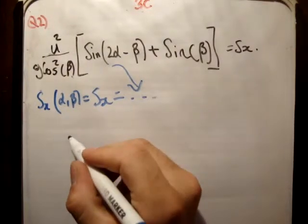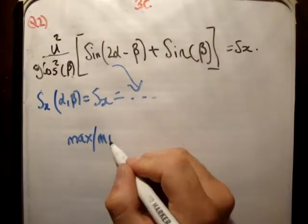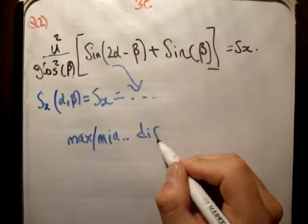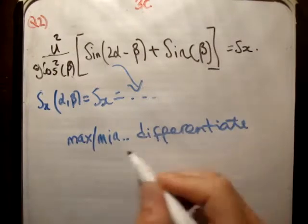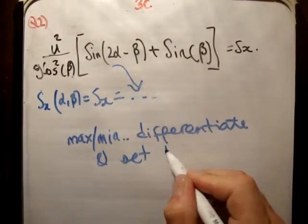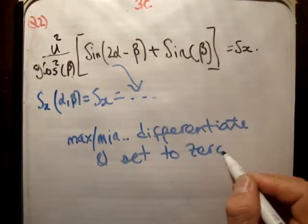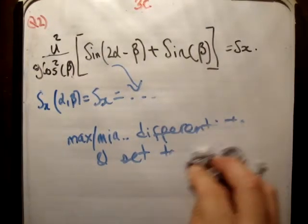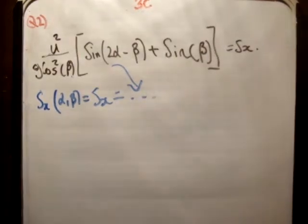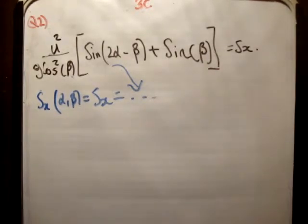Because for maxima or minima, you differentiate and set to zero. Simple. And you need to decide what you're maximizing. In this case, we're maximizing the angle of projection, alpha. So we differentiate with respect to alpha. If you wanted to maximize the angle of inclination, then we would differentiate with respect to beta.